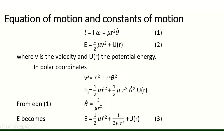So E is equal to half mu r dot squared plus half mu r squared theta dot squared plus U of r. From equation 1, theta dot is equal to L by mu r squared. Substituting, E becomes half mu r dot squared plus L squared by 2 mu r squared plus U of r.